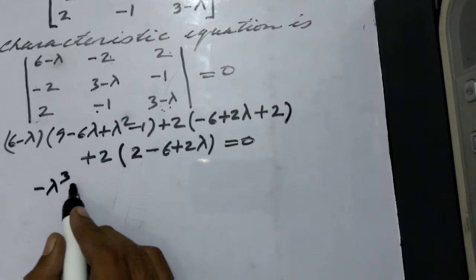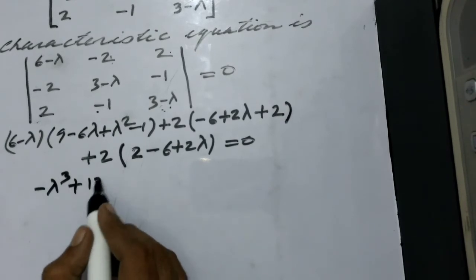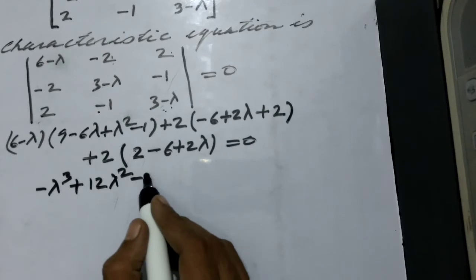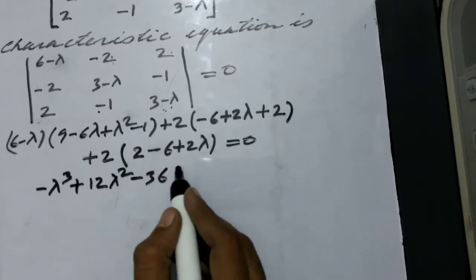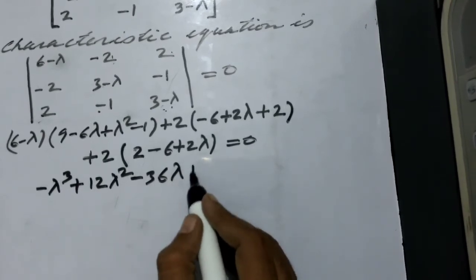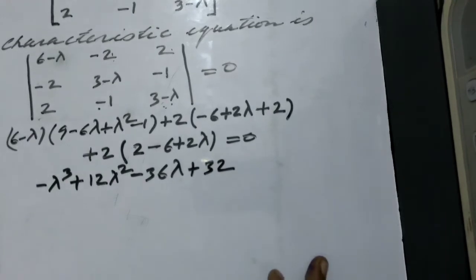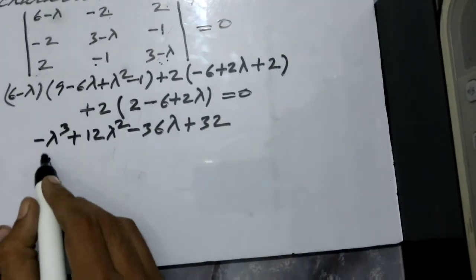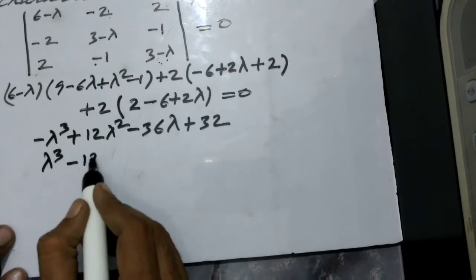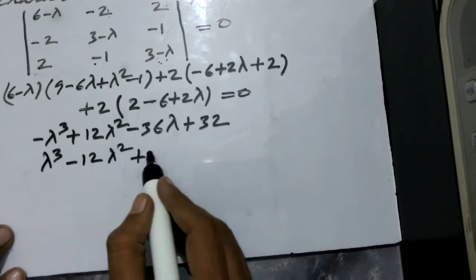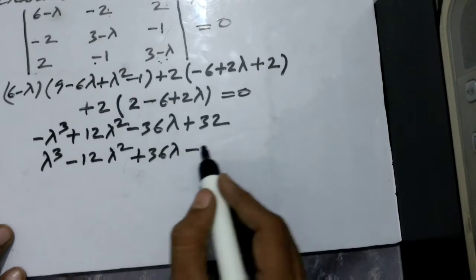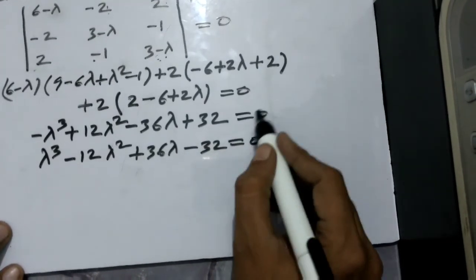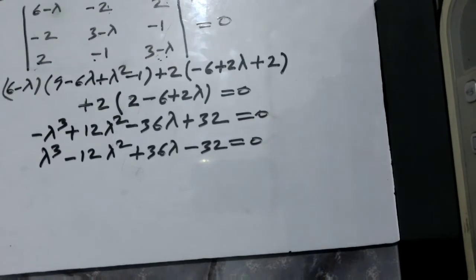After simplification and multiplying through by minus 1, we have the characteristic equation: lambda cubed minus 12 lambda squared plus 36 lambda minus 32 equals zero.